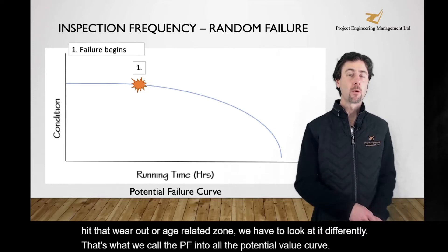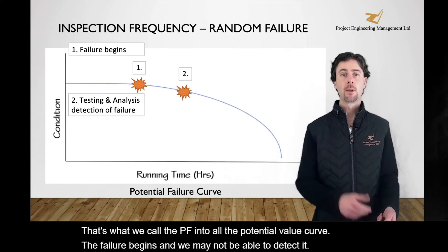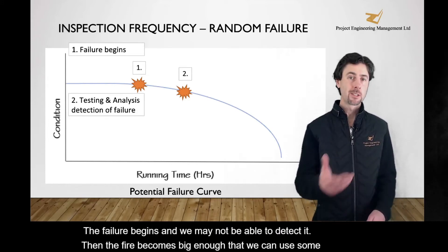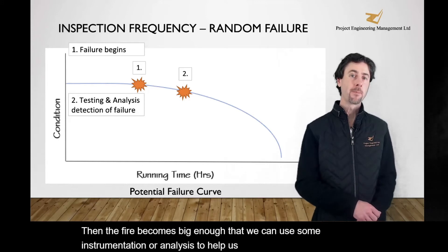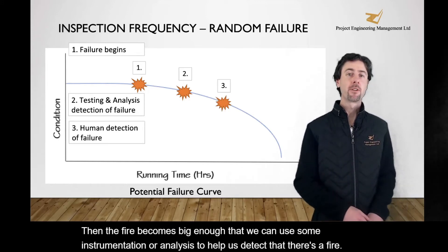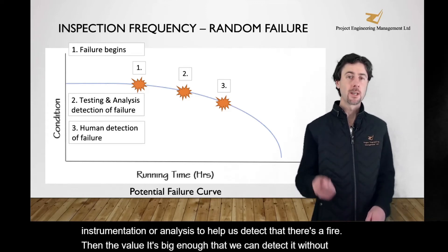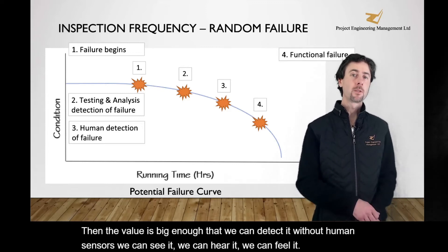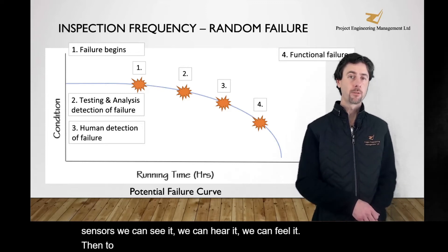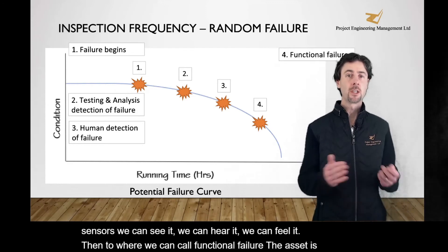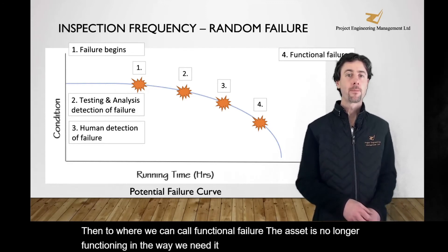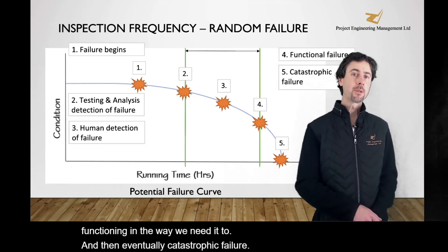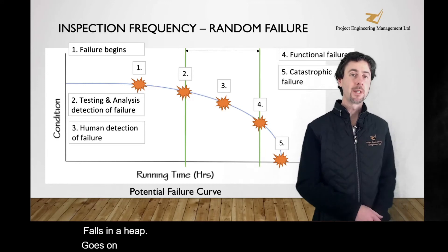The failure begins and we may not be able to detect it. Then the failure becomes big enough that we can use some instrumentation or analysis to help us detect that there's a failure. Then the failure gets big enough that we can detect it with our human sensors — we can see it, hear it, feel it. Then we reach what we call functional failure, where the asset is no longer functioning the way we need it to. And then eventually, catastrophic failure — it falls in a heap, goes on fire, smashes to pieces perhaps.